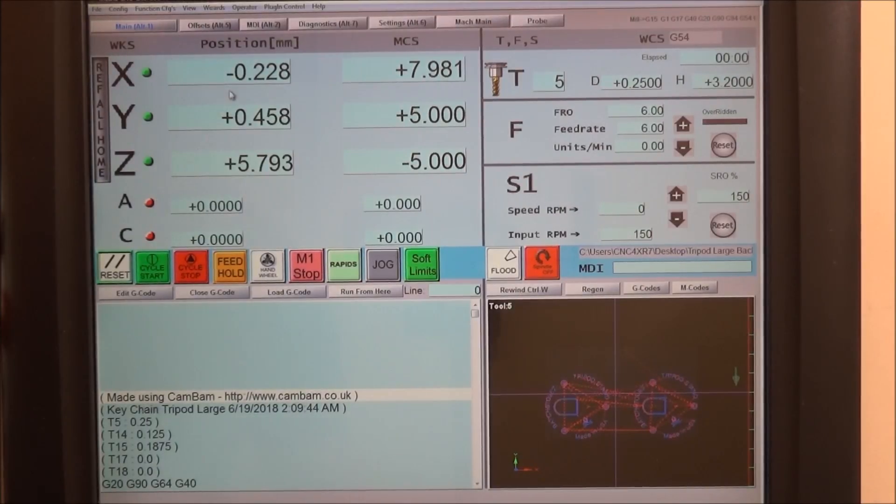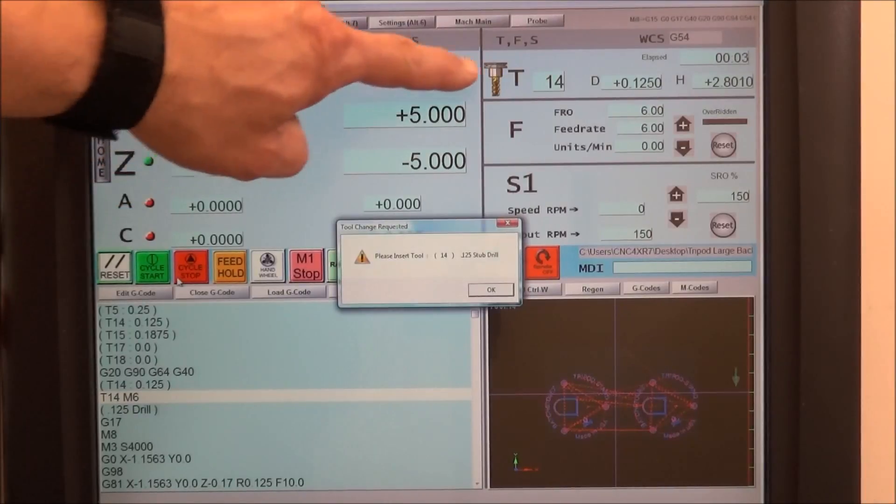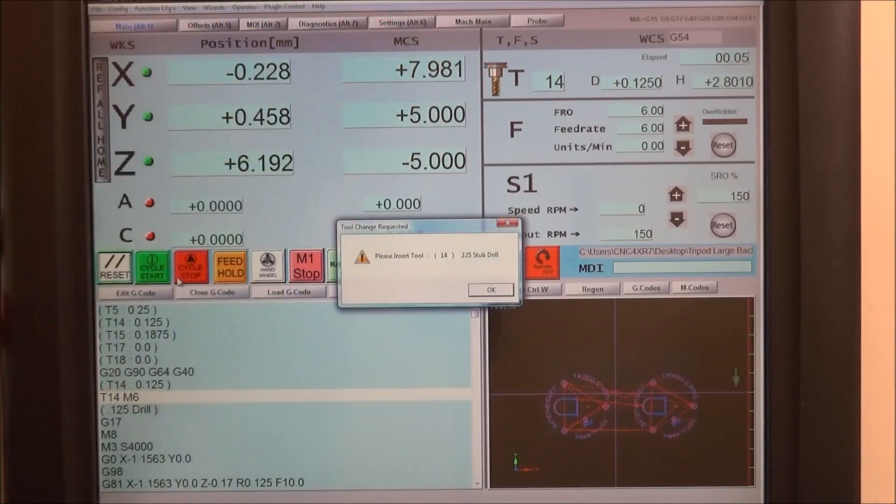So here we go, we'll hit cycle start. You should see this tool change tool here blink. All right, you can see that we have our blinking tool here to indicate that we're changing the tool.